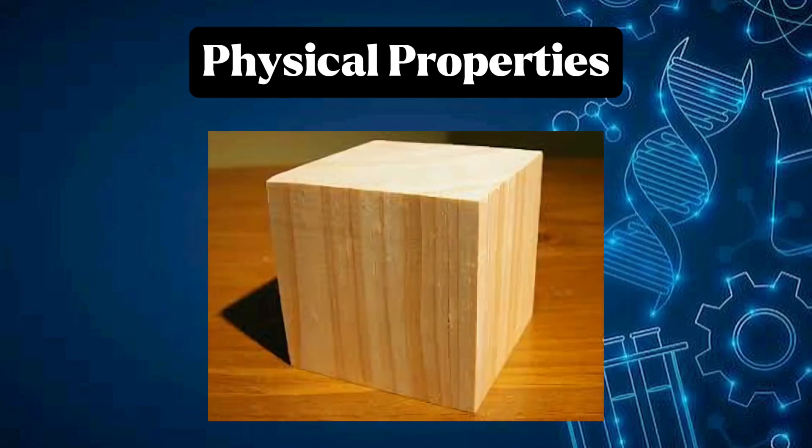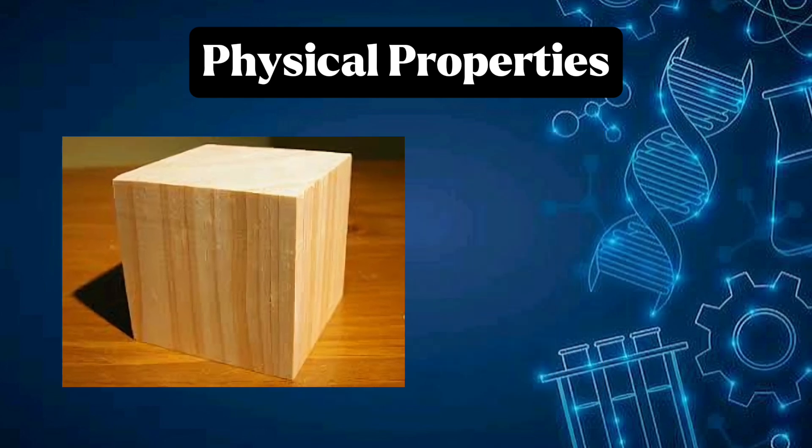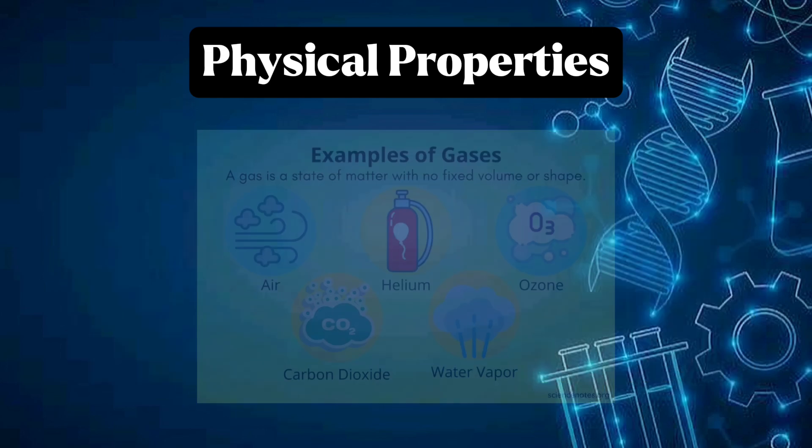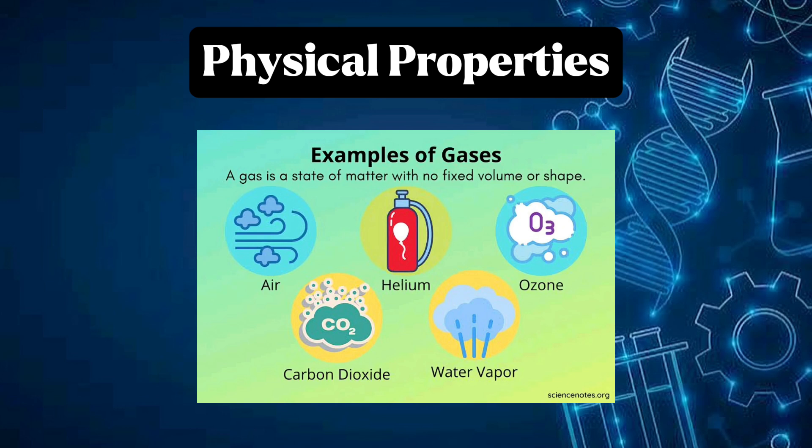Some physical properties are specific to each phase of matter. Matter in liquid form has the ability to flow. Some solid matter are known for their hardness — solid materials have different levels of hardness, some are hard while others are soft. Gases, on the other hand, can be compressed and most of them are colorless.